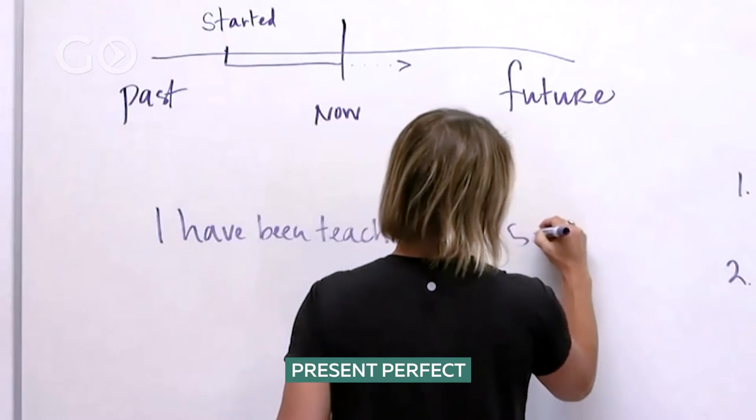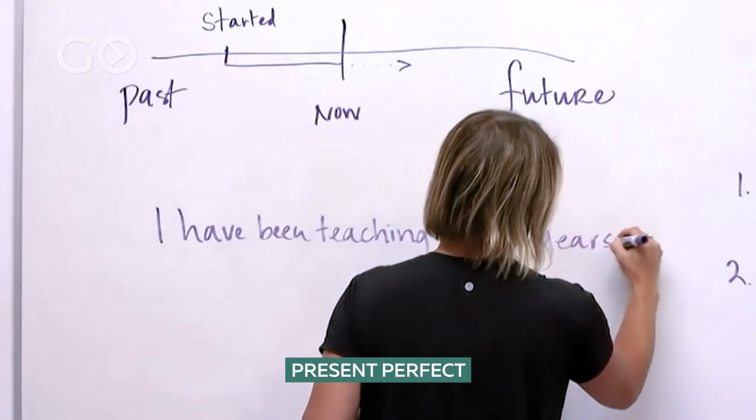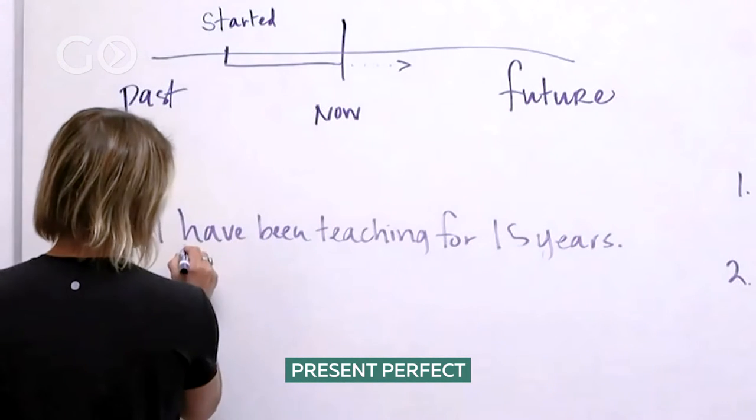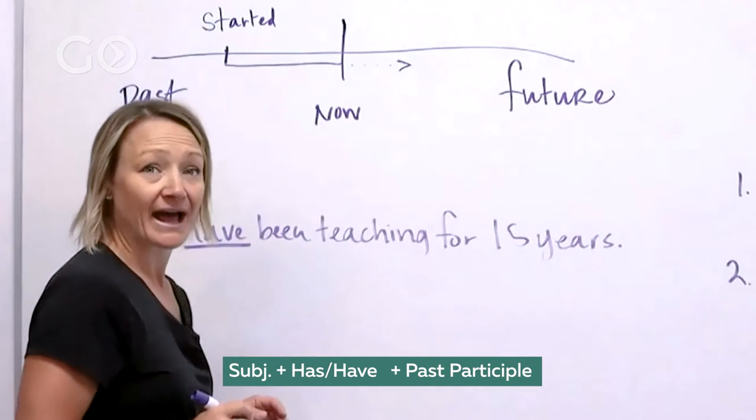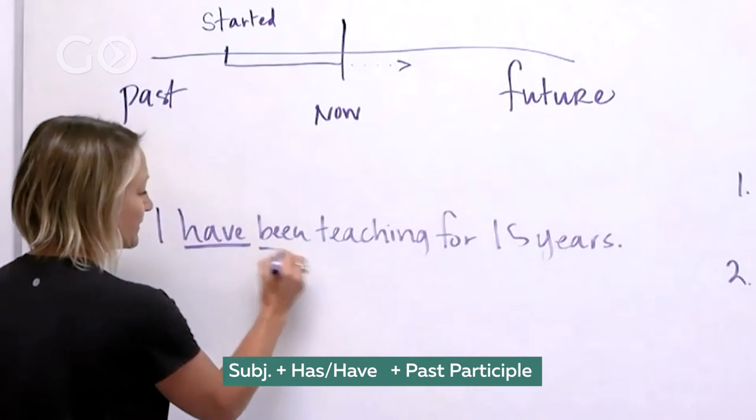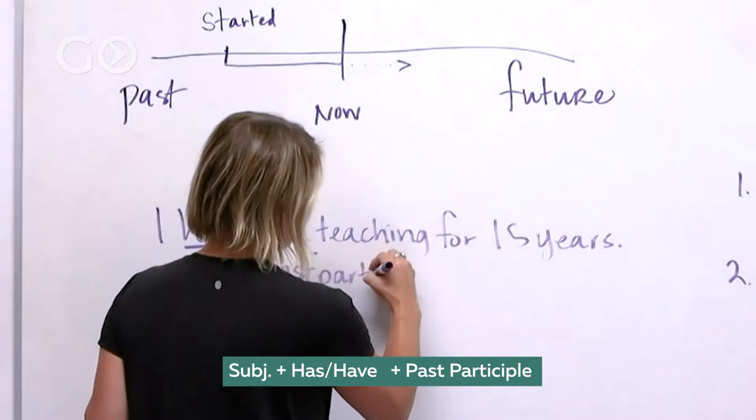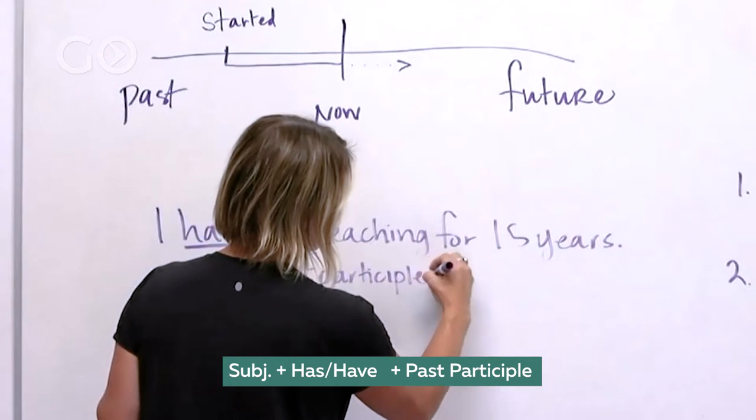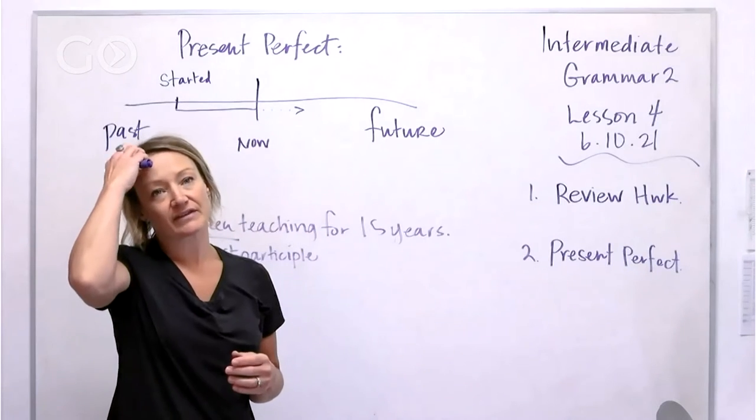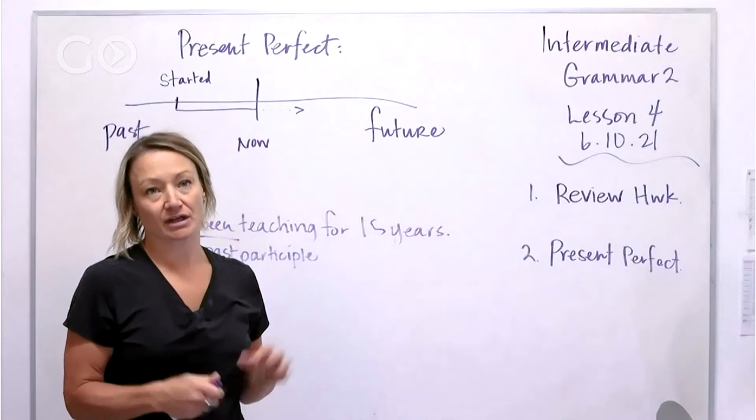Have been - this is your... you've got the word 'have,' and then you've got this which we call the past participle. So we use this tense really often in American English.